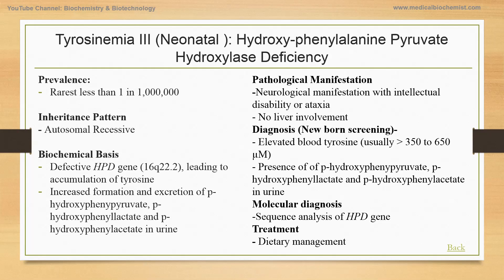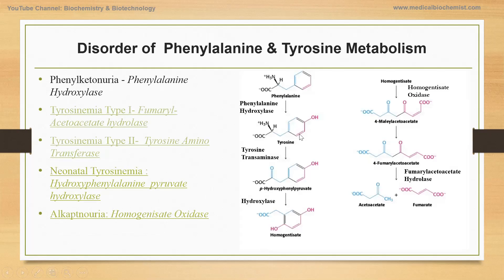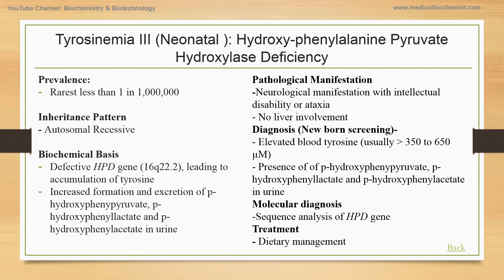The rarest among the tyrosinemias is type 3 tyrosinemia, also known as neonatal tyrosinemia. This is caused by the deficiency of parahydroxyphenylpyruvate hydroxylase, the enzyme responsible for the conversion of parahydroxyphenylpyruvate. The deficiency causes accumulation of phenylpyruvate and hydroxyphenylpyruvate, and increases the formation and excretion of parahydroxyphenylpyruvate, parahydroxyphenyllactate, and parahydroxyphenylacetate in urine.